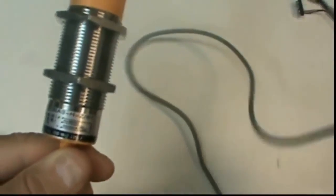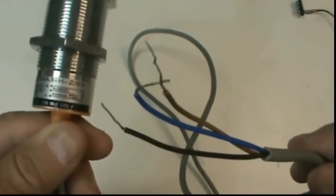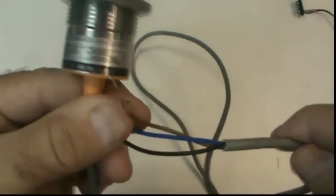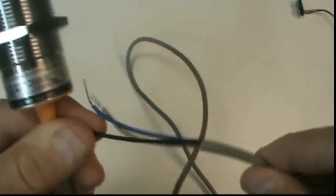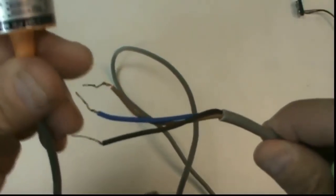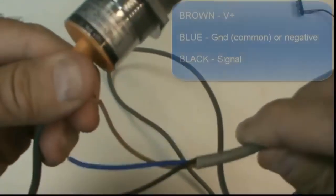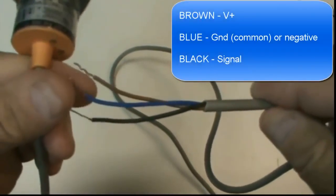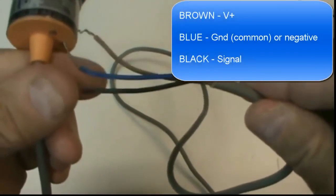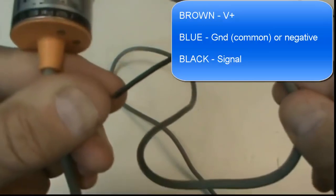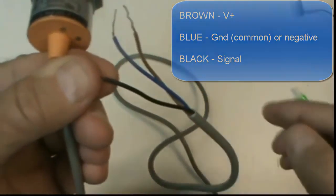The color coding for the sensor is a little unconventional compared to other things in electronics, but in sensors, our brown wire is our positive, our blue wire is the negative, and our output signal is the black wire.